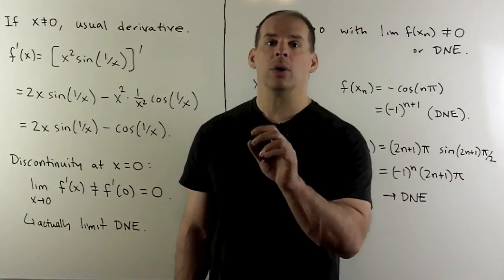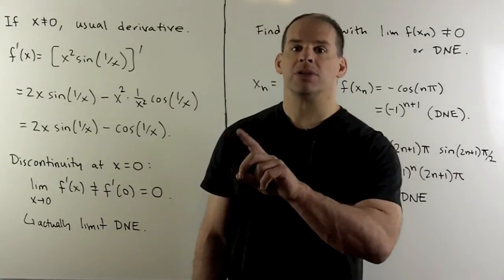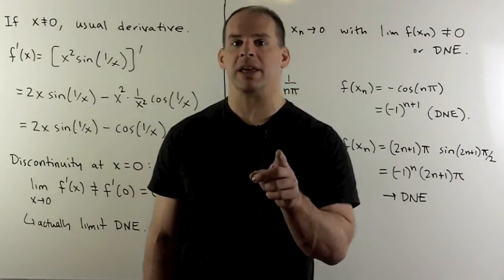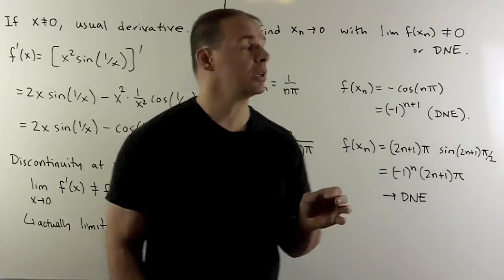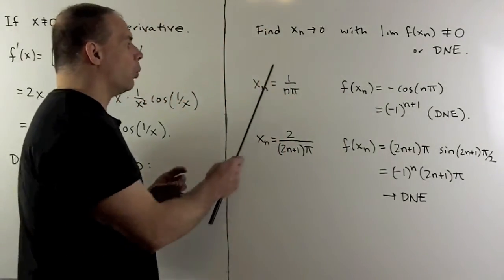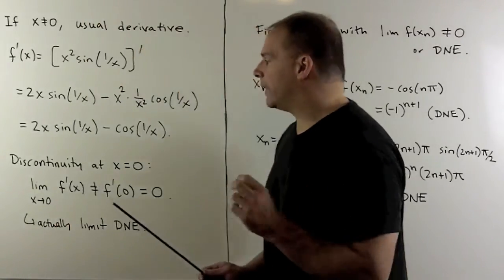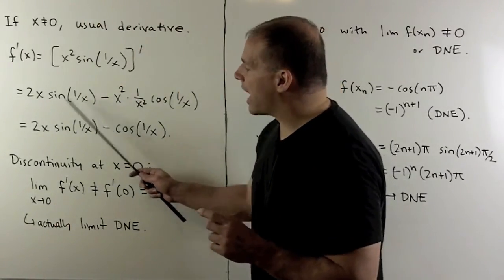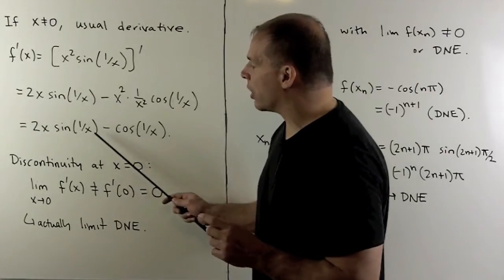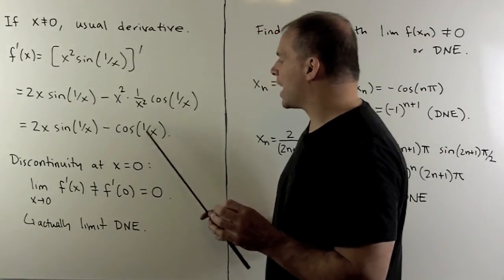Now, we'll just find one sequence going to 0, such that when we put it in the function, we get something that does not converge at all. So I can use x_n equal to 1/(nπ). If we put that into the function, sine of multiples of π, we're going to go to 0. So -cos(nπ).